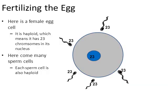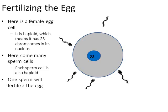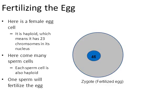One sperm will eventually penetrate the egg — not the entire sperm, just the head of the sperm will enter the egg. The nucleus of the sperm fuses with the nucleus of the egg. 23 chromosomes from the sperm, 23 chromosomes from the egg — you now have what's called a fertilized egg, or a zygote, with 46 chromosomes. Congratulations, mom's pregnant.